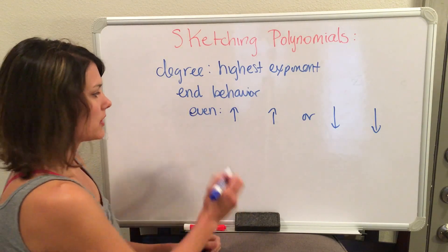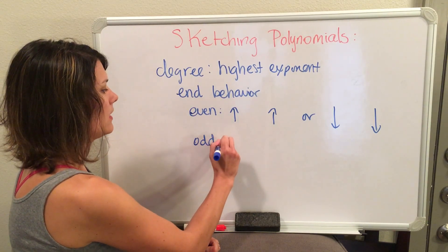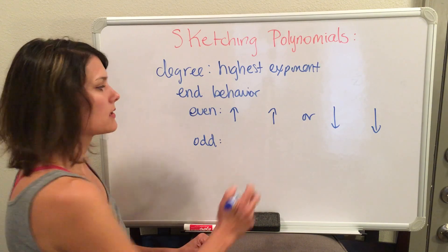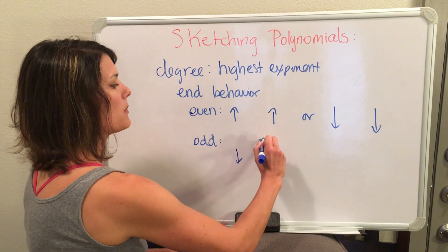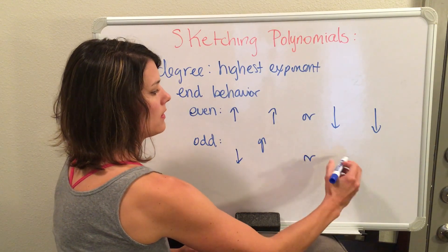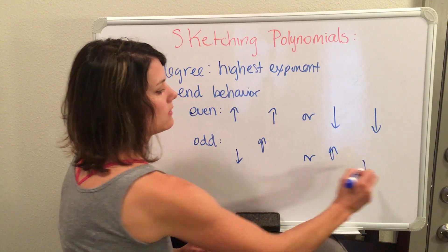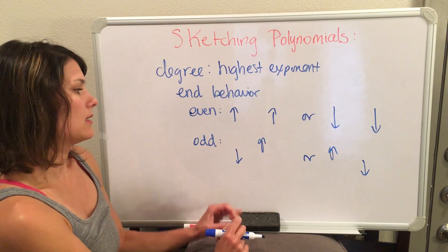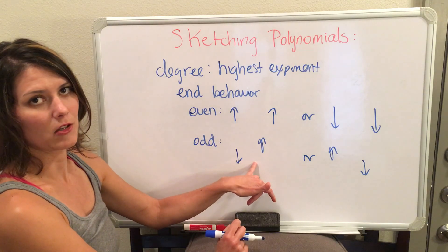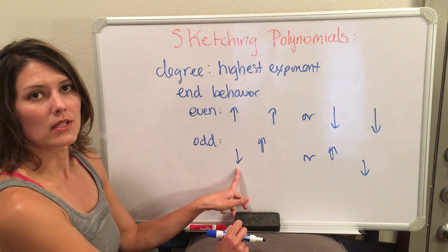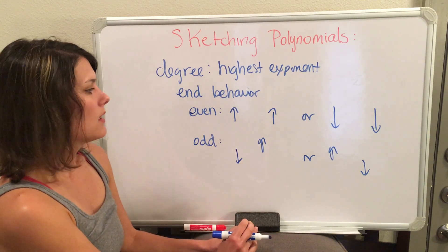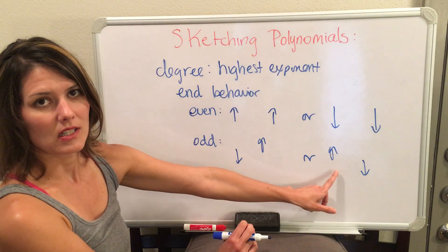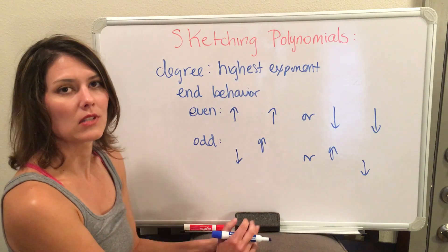Now if you have an odd degree, your end behavior will go in opposite directions — either down and then up, or up and then down. If you have a positive leading coefficient, it will start going down and then go up. But if you have a negative leading coefficient, it will start going up and then go down.